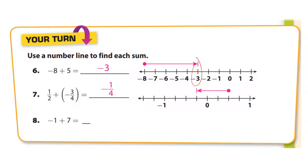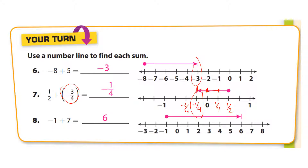On the number line, negative one-half is shown and we're moving in fourths. Each unit is one-fourth: zero is here, negative one-fourth is here, negative two-fourths (negative one-half) is here. Moving three-fourths to the right: one-fourth, two-fourths, three-fourths — you land on negative one-fourth. For negative one plus seven: start at negative one, move seven to the right, and you end up on six.